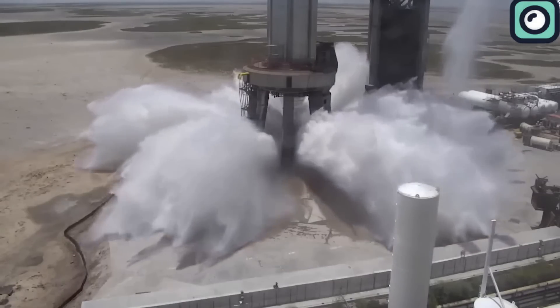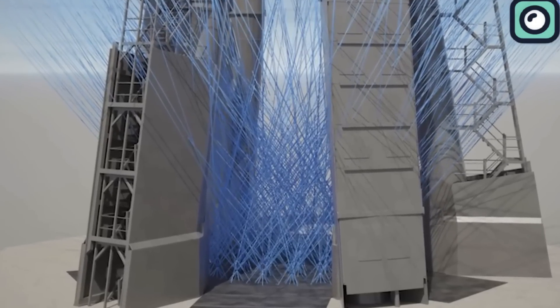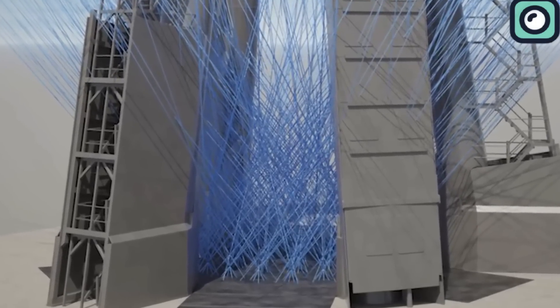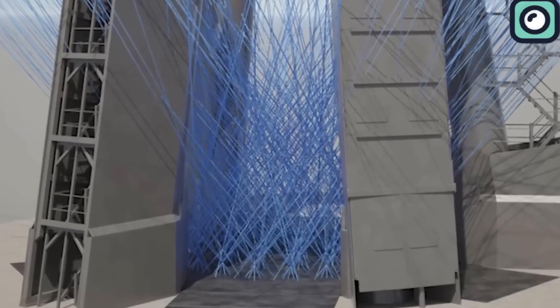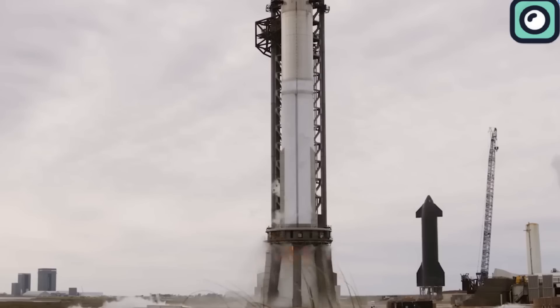sprays vast amounts of water to absorb the heat and prevent damage by creating steam barriers. This edition was tested in July 2023 and showed promising results in reducing damage by redirecting the intense exhaust from the Raptor engines during liftoff.